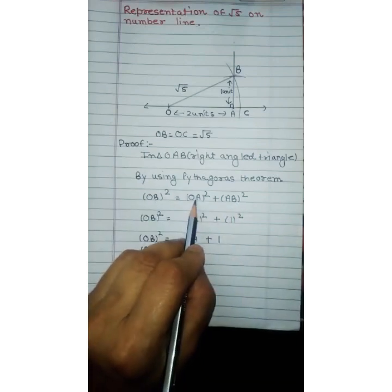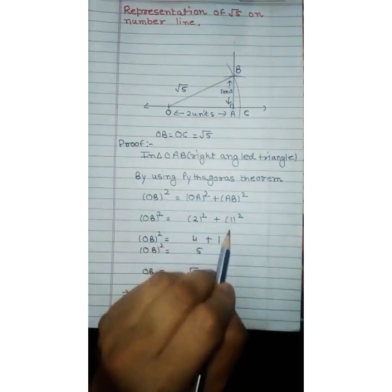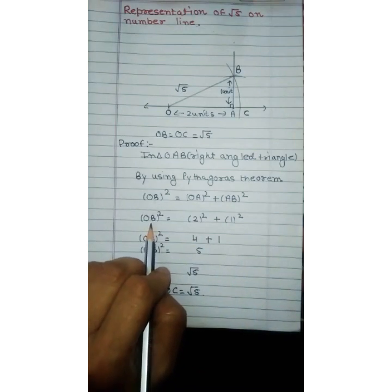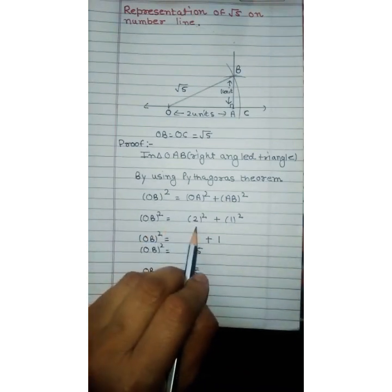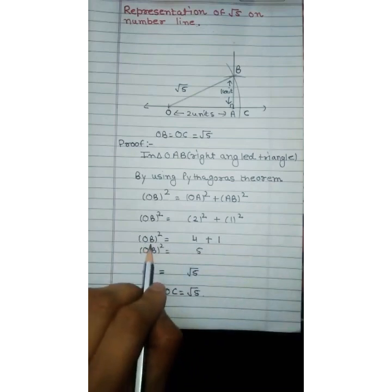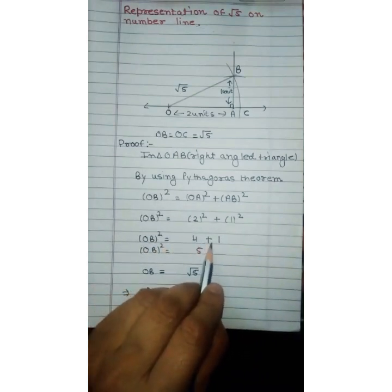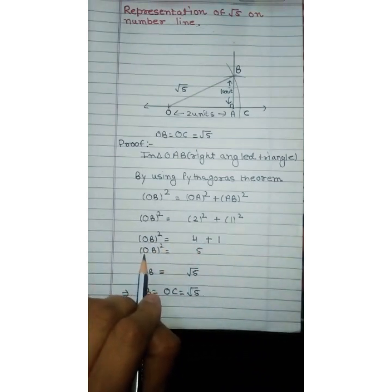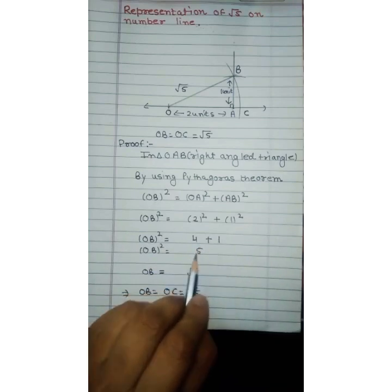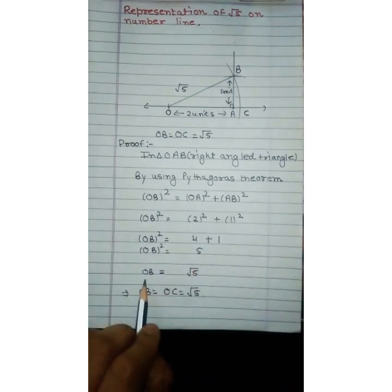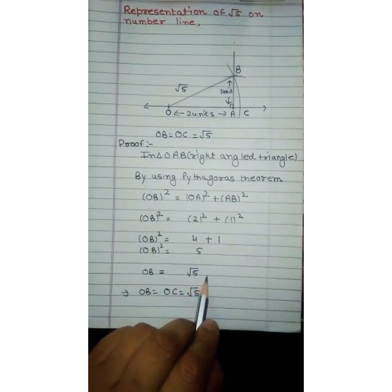Here OA is equal to 2 and AB is equal to 1. It means OB² = 2² + 1². OB² = 4 + 1. It means OB² = 5. It means OB = √5.